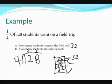For the next problem, you have to multiply 32 times 3 to get three-fourths, because three-fourths plus one-fourth equals a whole. So we take 32 times 3 to get 96.